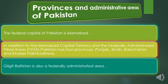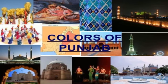Today we're going to discuss about the provinces and administrative areas of Pakistan. The federal capital of Pakistan is Islamabad. In addition to the Islamabad Capital Territory and the Federally Administered Tribal Areas, also called FATA, Pakistan has four provinces: Punjab, Sindh, Balochistan, and Khyber Pakhtunkhwa. Gilgit-Baltistan is also a federally administered area. In this chapter we're going to discuss different things and different colors of Punjab.